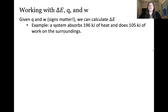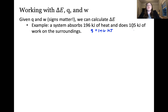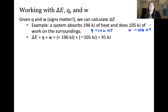Let's consider calculating a change in energy if we're given information about heat and work. If a sample absorbs 196 kilojoules of heat and does 105 kilojoules of work on the surroundings, how can we find the internal energy? The system is absorbing 196 kilojoules of heat, so Q is positive 196 kilojoules. The system does 105 kilojoules of work on the surroundings, meaning work is equal to negative 105 kilojoules. Putting these together, the internal energy change equals 196 kJ plus negative 105 kJ, giving a total internal energy change of 91 kilojoules.